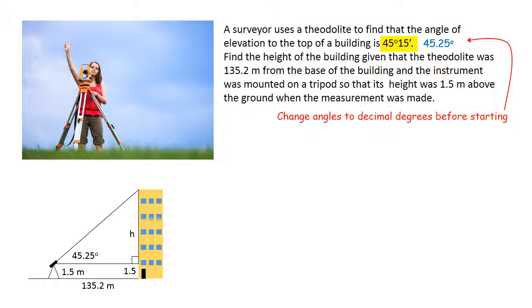To find h is simple trigonometry. The question involves opposite and adjacent. That makes it a tan question. The tan of 45.25 is equal to h over 135.2. From there it's just a matter of simple transposition and a little bit of calculation to work out h.